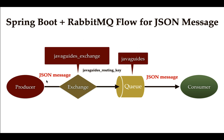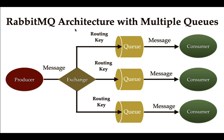In real-time projects, we basically use JSON messages for communication between producer and consumer. So in this course, you will also learn how to use a message of type JSON for communication between producer and consumer using RabbitMQ in a Spring Boot project.